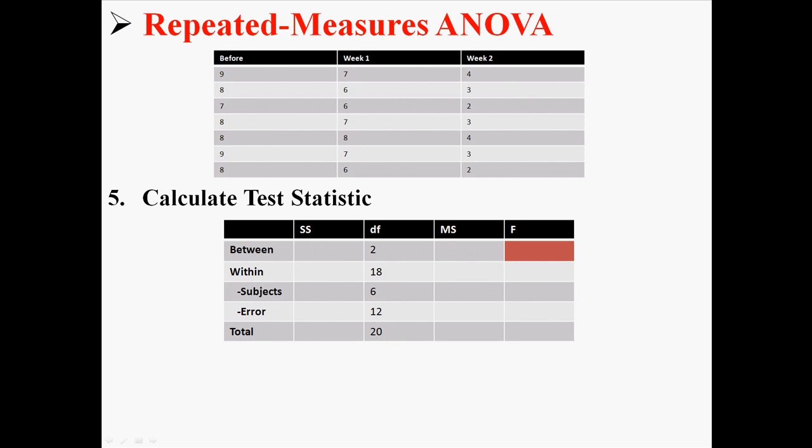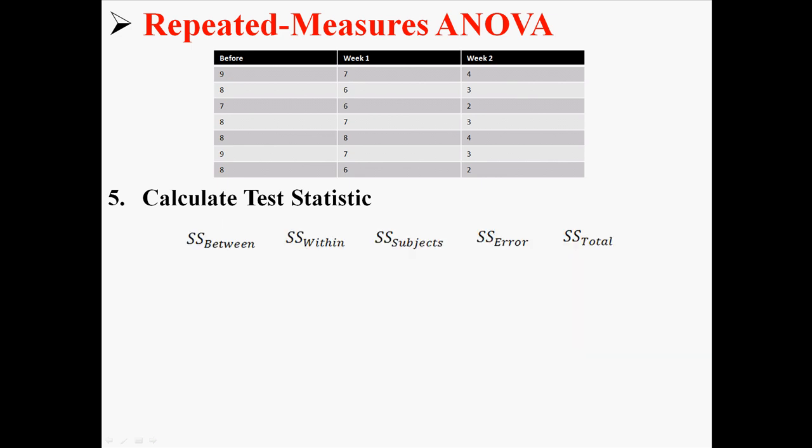So now we just need to find the sum of squares for each of those. We're going to need to find sum of squares for between, within, subjects, error, and total. So let's start doing that first with sum of squares between.